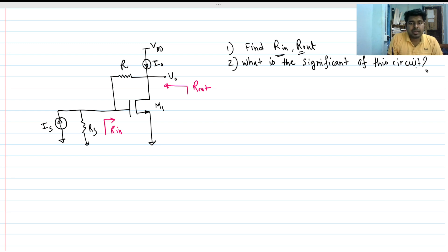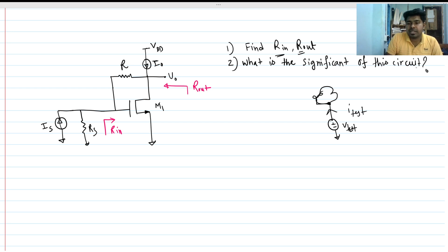To find the impedance at a node with respect to ground, we apply a small signal test voltage — let's say V_test with respect to ground — and find the current coming out of this voltage source. We take the ratio of V_test by I_test to find the impedance looking into this node.